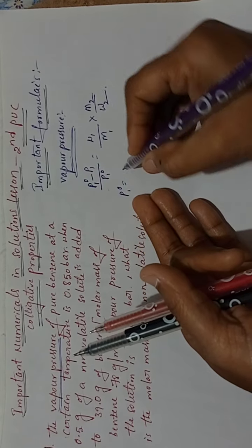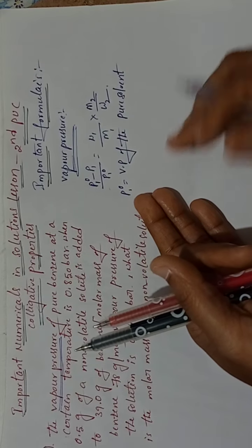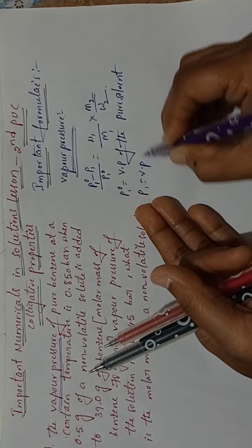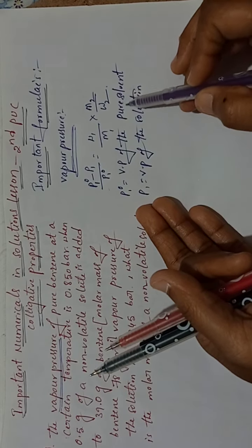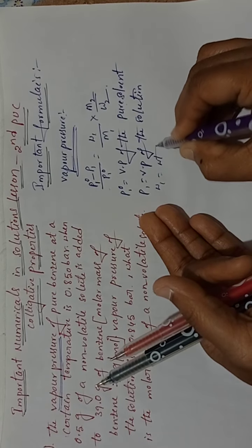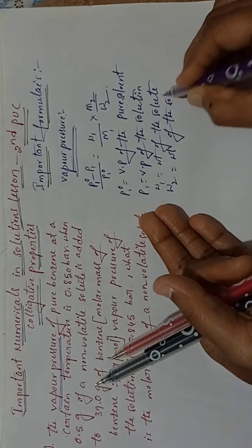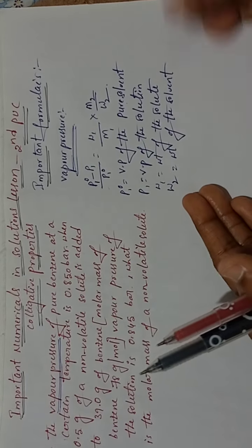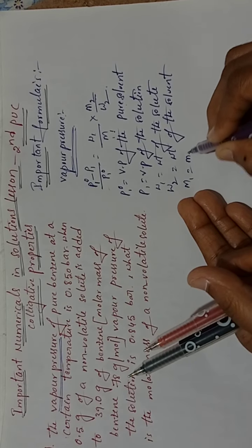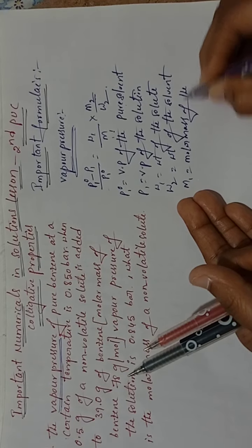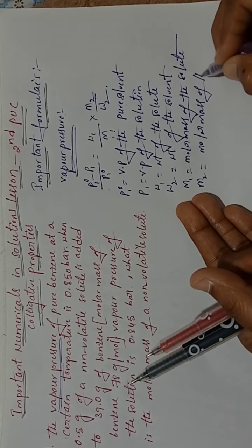p1⁰ is the vapor pressure of the pure solvent, and p1 is the vapor pressure of the solution — the zero superscript indicates the pure solvent. w1 is the weight of the solute, w2 is the weight of the solvent, m1 is the molar mass of the solute, and m2 is the molar mass of the solvent.